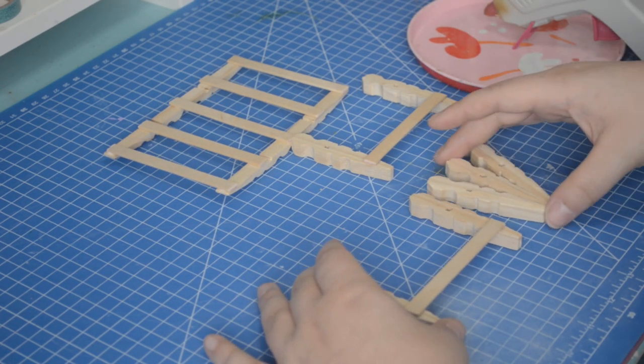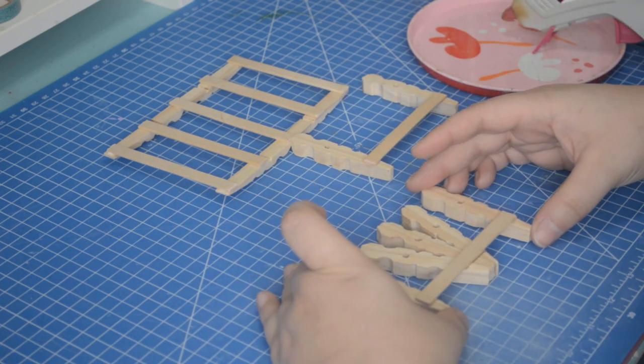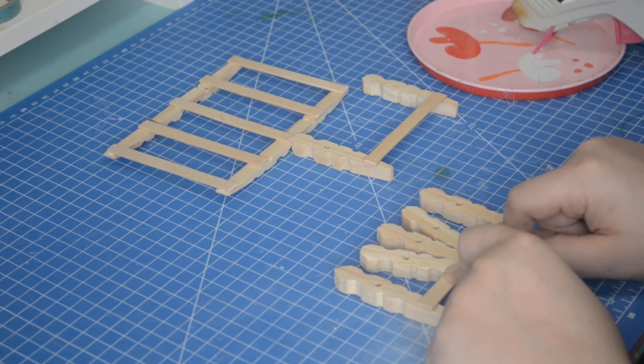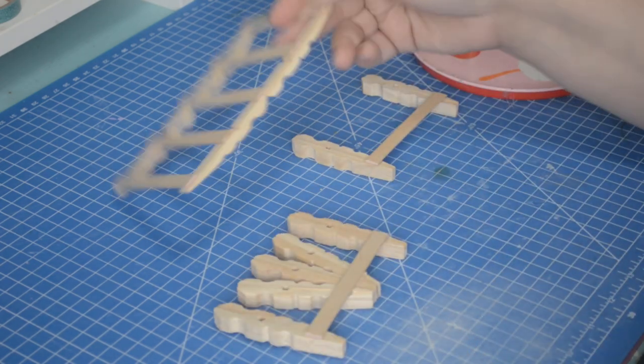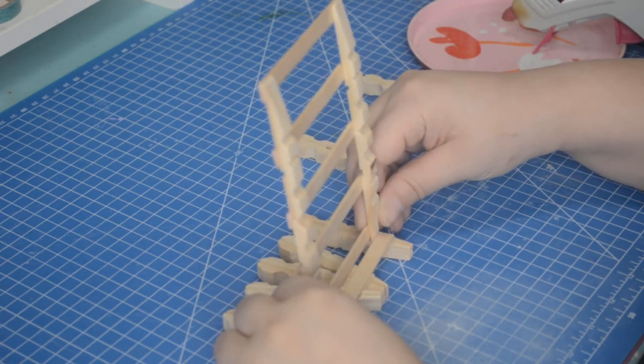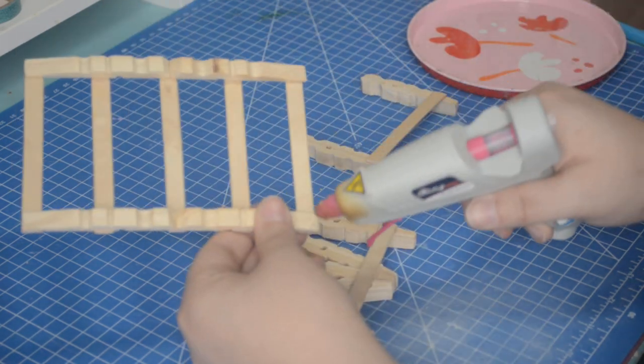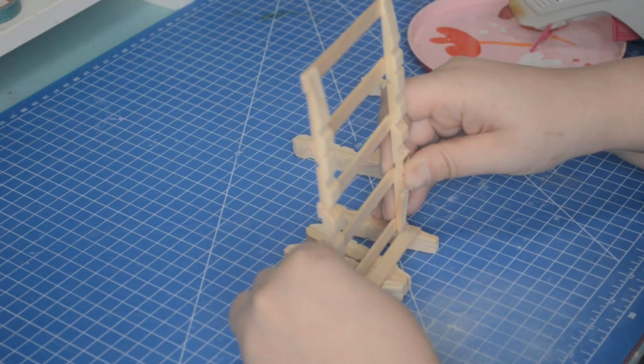We're going to glue the fan piece to one of the headboard pieces. It looks nice, doesn't it? Using the horizontal popsicle stick on our headboard as a brace, we are gluing the bed frame to rest upon it and doing the same for the other side.